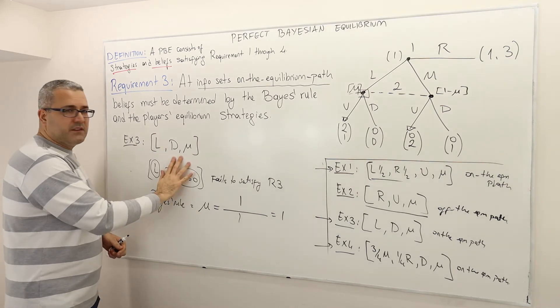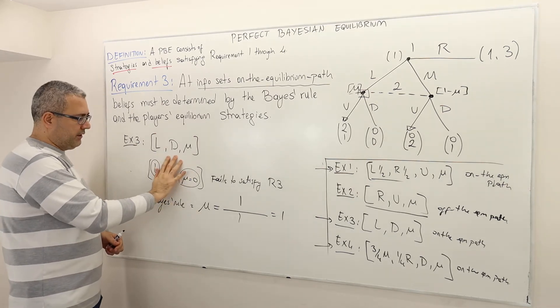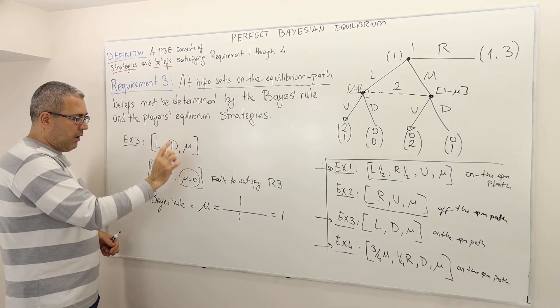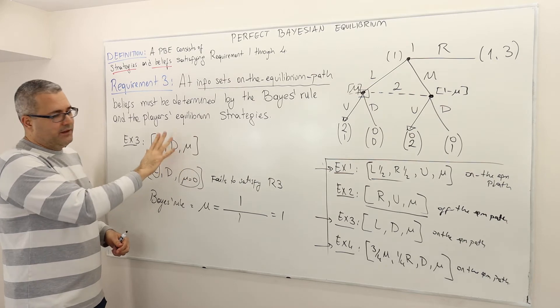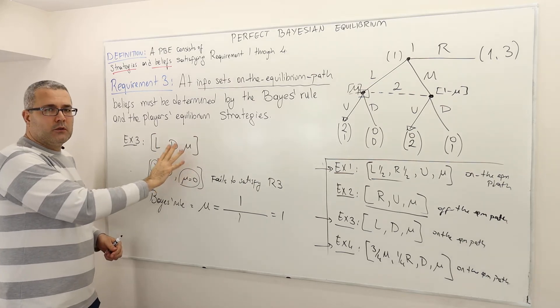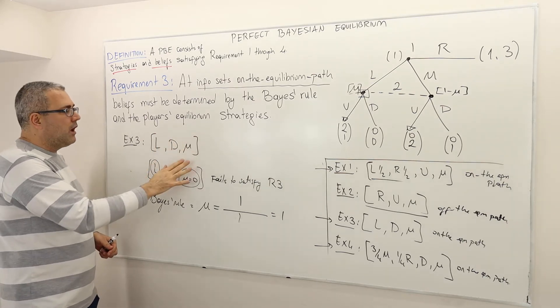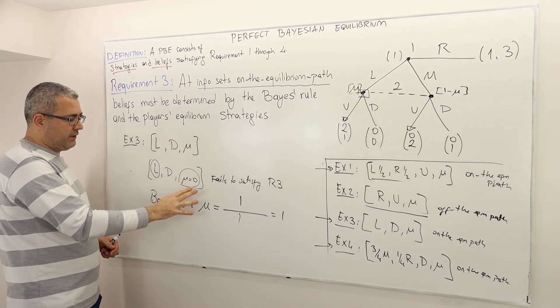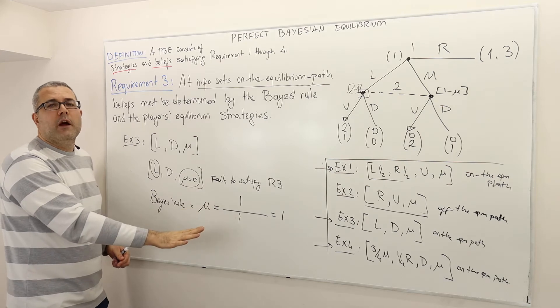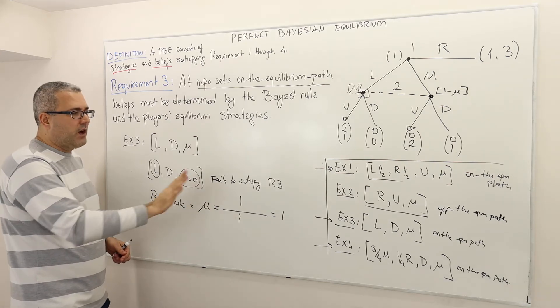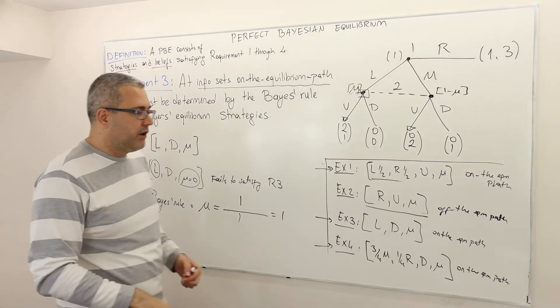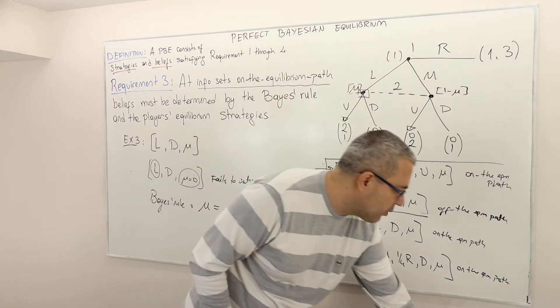So if LD is the equilibrium strategy profile, it fails requirement two, but mu also has to be equal to one. Otherwise it's going to fail requirement three as well.